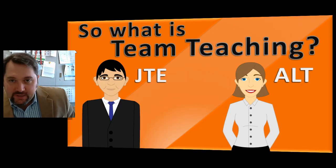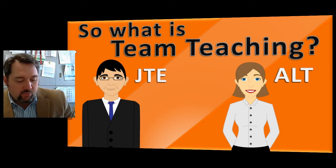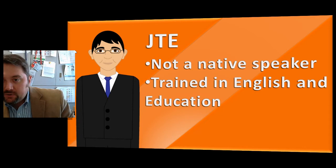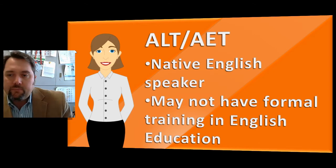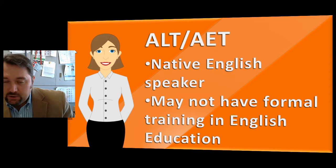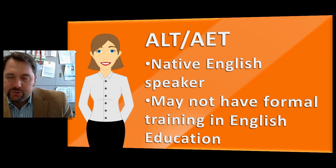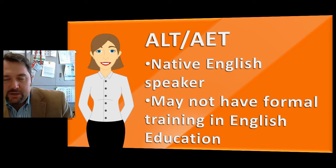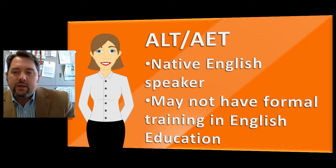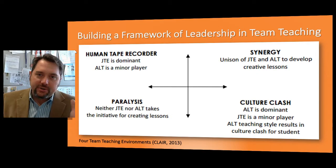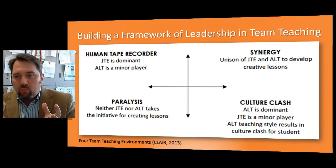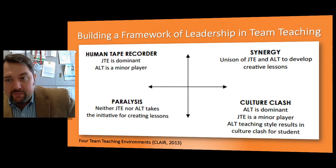So what is team teaching? Team teaching is two teachers working together in the classroom. One is a JTE — usually a non-native speaker of English, but trained in education and English, specifically English education. They're paired up with an ALT, sometimes called an AET — Assistant Language Teacher or Assistant English Teacher. They are a native English speaker, but usually don't have any formal training in English education. They're usually a fresh college graduate with some interest in Japan, coming through the Ministry of Education to work there. These two teachers, the JTE and the ALT, are supposed to work together as a team in the classroom for the benefit of Japanese K-12 English students.